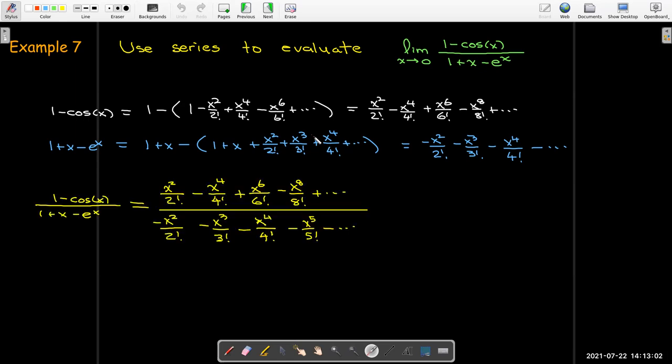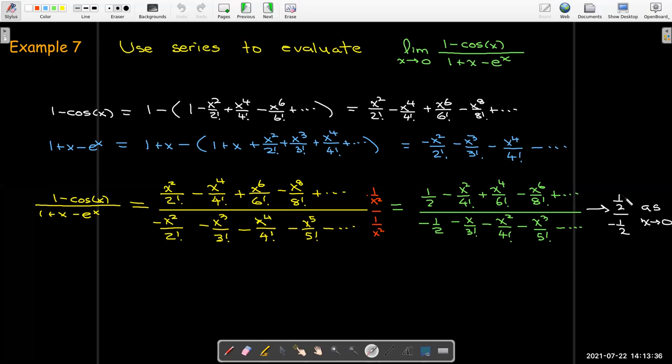And so now if I take that ratio, I can see that the dominant term, remember I'm looking at the limit as x goes to 0, the dominant term is going to be x squared. So let me go ahead and multiply top and bottom by 1 over x squared. And so I can see then I'm left with a 1 half over negative 1 half. And then a bunch of terms that depend on x. Well, now this is no longer an indeterminate form. So I can just use direct substitution. And as x approaches 0, that's going to approach 1 half over negative 1 half. And so my limit value is negative 1.